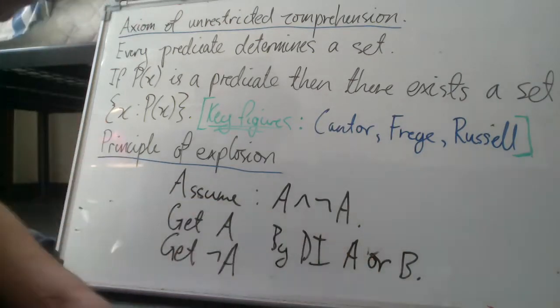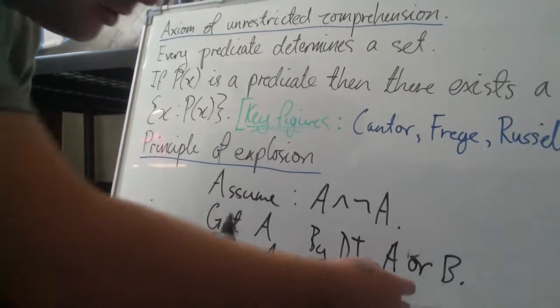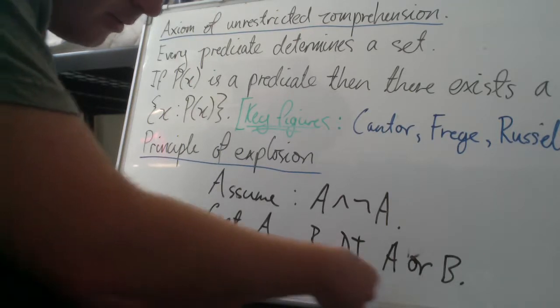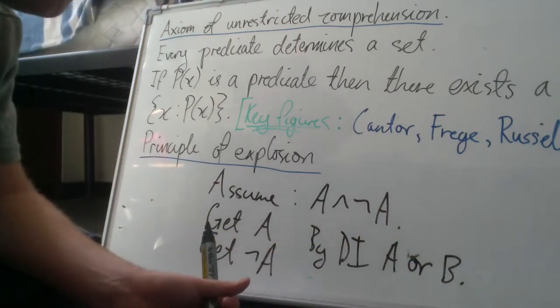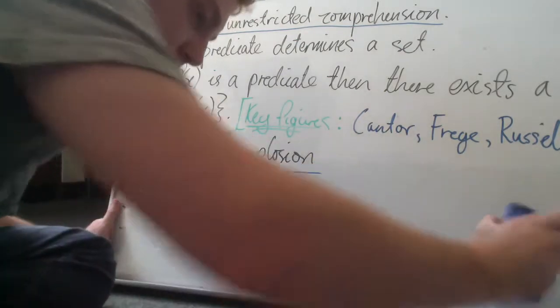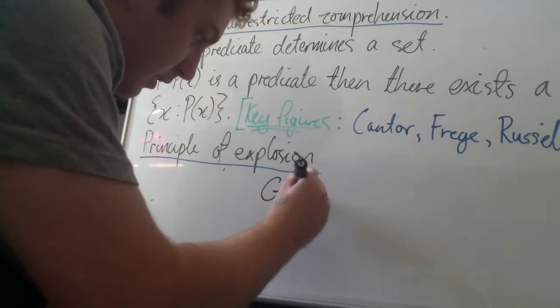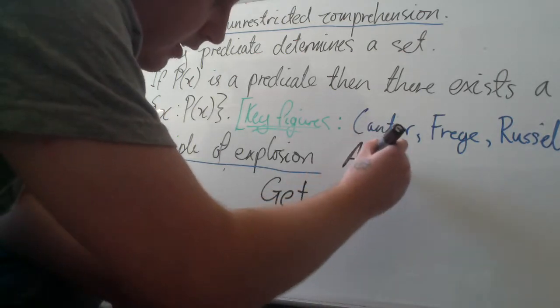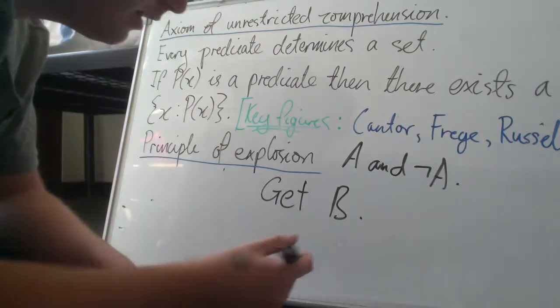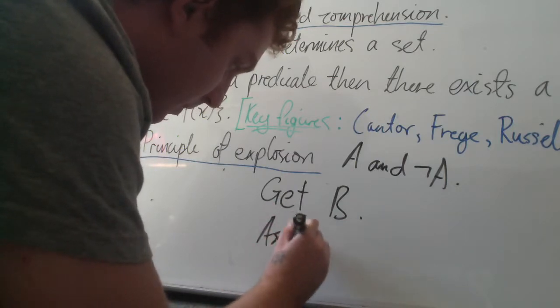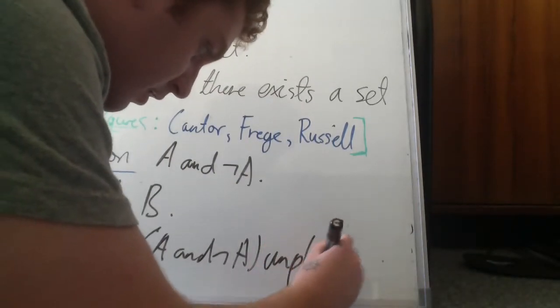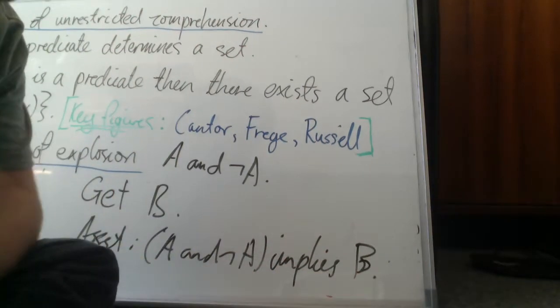So we know this is true, but we also know that not A is true. Therefore A is false, but this disjunction is true. Hence B must be true. So we've reached B. Now the final step, which is conditional proof. Since we started with A and not A, and we derived B, we may assert that A and not A implies B. There you go, that's the principle of explosion.